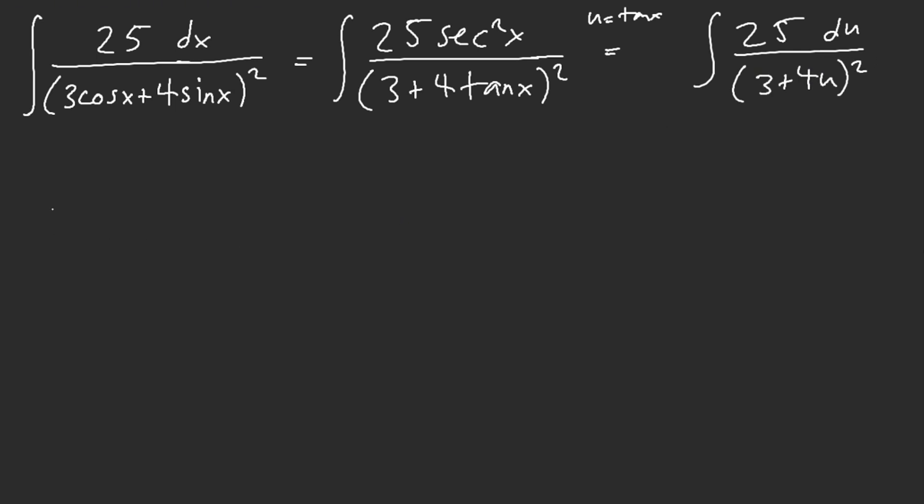And then we can just easily say, okay, this is now negative 25 divided by 4 of 1 over 3 plus 4u.